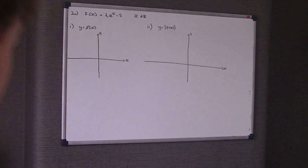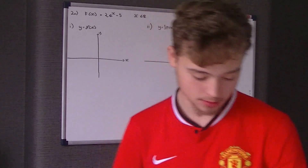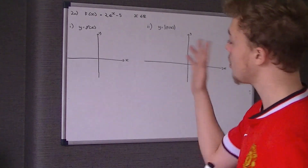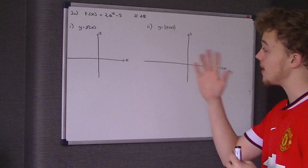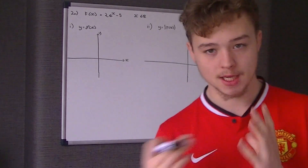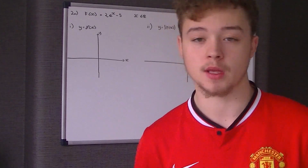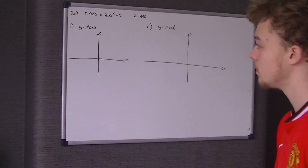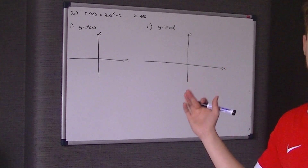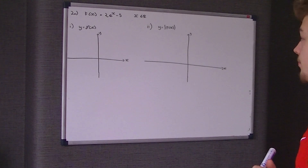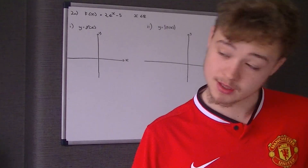This is question 2 for Edexcel C3 June 2015 paper. We are given a function f(x) = 2e^x minus 5, where x can be any real number. You don't need to worry about that — it just means any number you can think of. Unless you're doing further maths, it has no relevance to this question. That's just the examiner trying to seem a bit more intelligent, so I personally crossed that out.